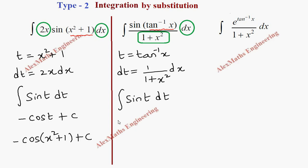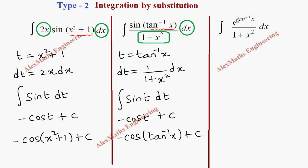The integration of sin(t) is minus cos(t) by the formula. Replacing t, the answer is minus cos(tan⁻¹(x)) + c. For the next problem, we have e^(tan⁻¹(x)) as the inner function, so we let t = tan⁻¹(x).